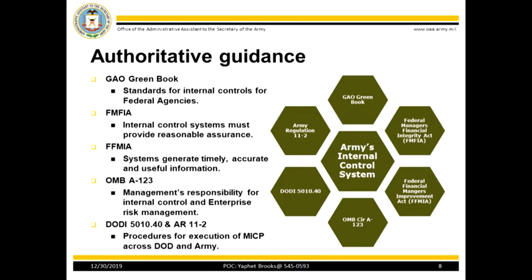The Federal Manager's Financial Integrity Act requires agencies to establish internal control and financial systems that provide reasonable assurance of achieving internal control objectives. These regulations require agencies to provide an annual statement of assurance on whether the agency has met these internal control objectives. The Federal Financial Management Improvement Act requires federal agencies to have systems that generate timely, accurate, useful information with which to make informed decisions and to ensure accountability. Agencies must report on compliance with federal financial management system requirements, federal accounting standards, and USSGL at the transactional level.